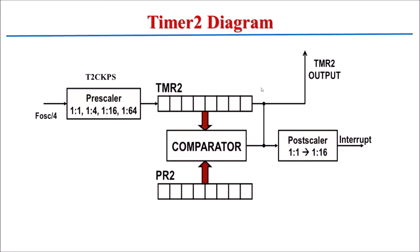This is the block diagram, through which we can understand the operation of this timer block. The oscillator clock frequency is divided by 4 and then given to the pre-scaler block. The T2CKPS bits are used to select the proper pre-scaler value. To use the frequency as-is, select 1:1. To divide by 4, select 1:4. For divide by 16, use 1:16, and for divide by 64, select 1:64.